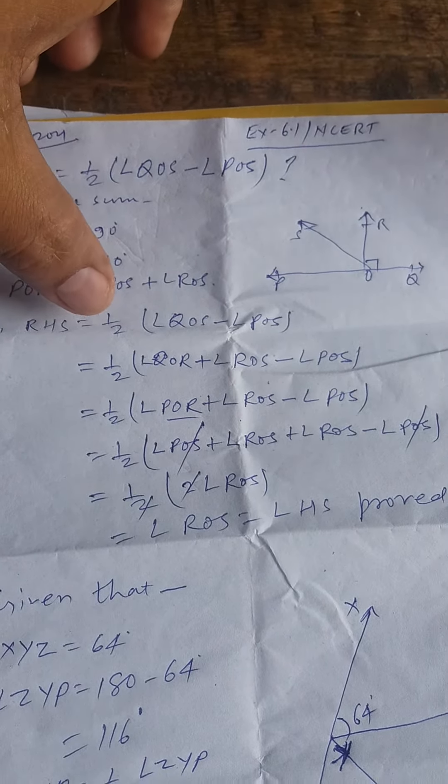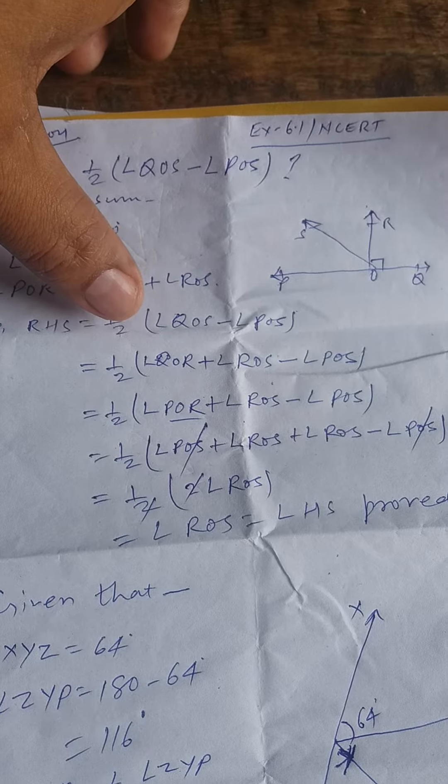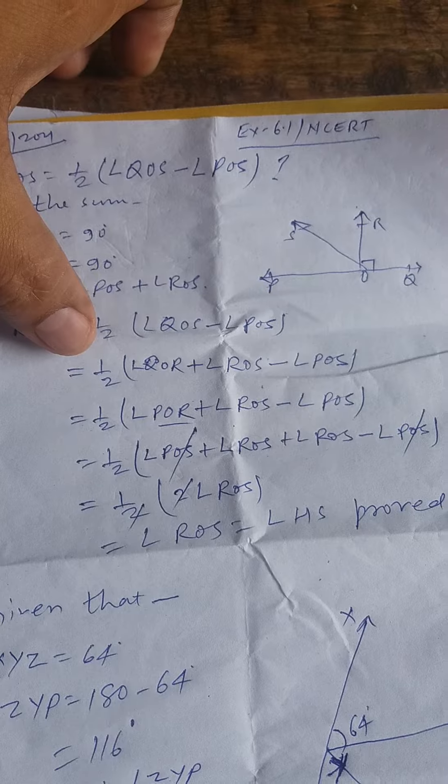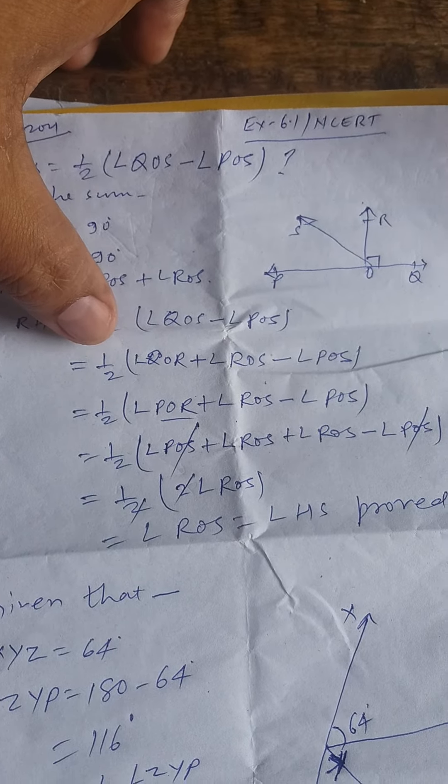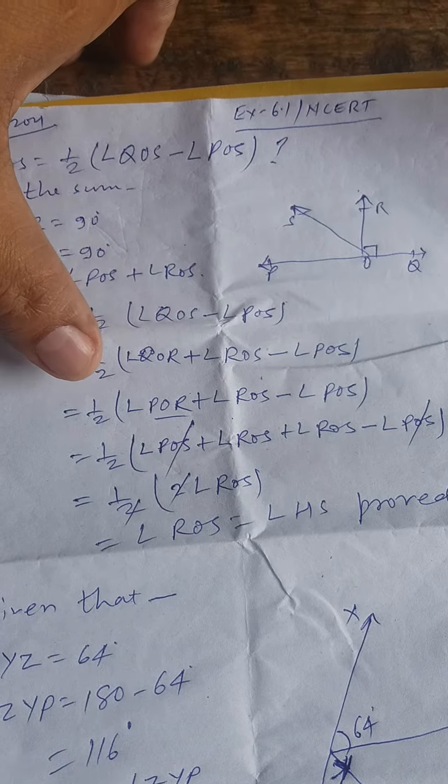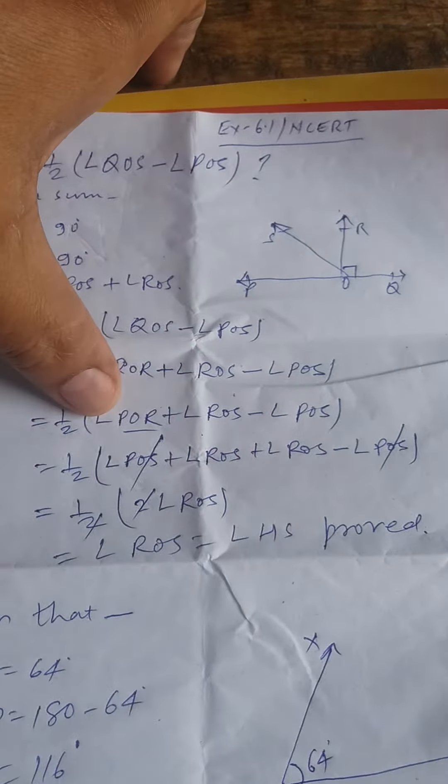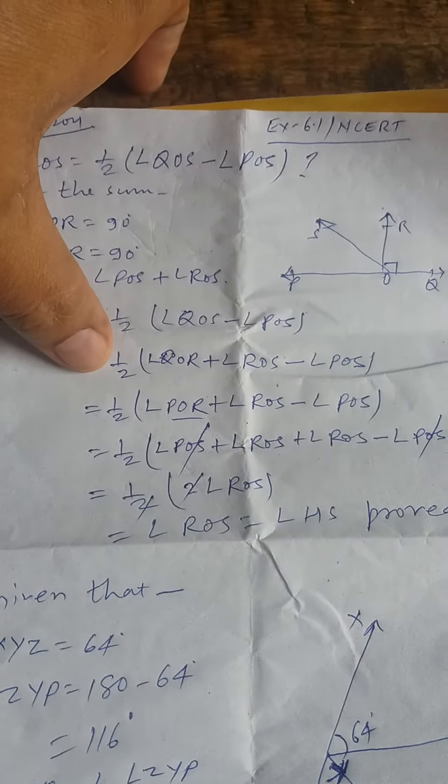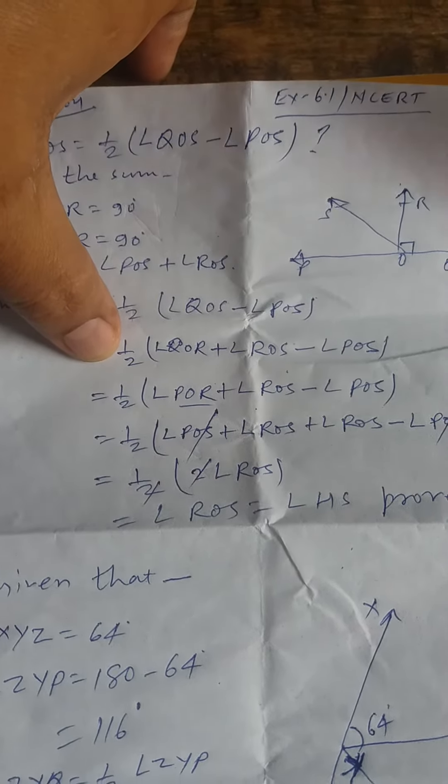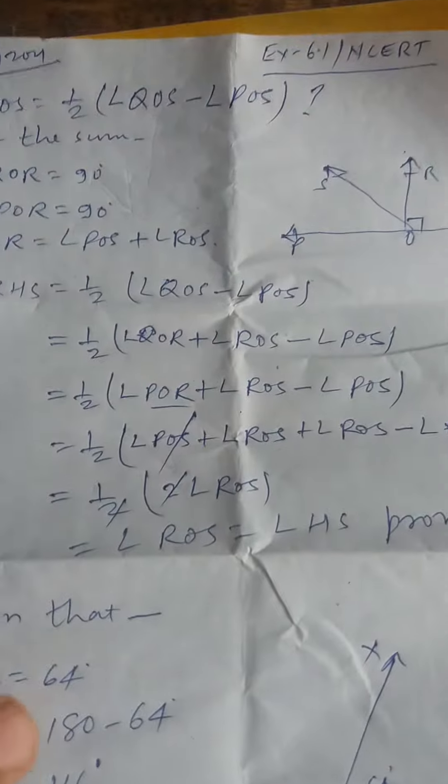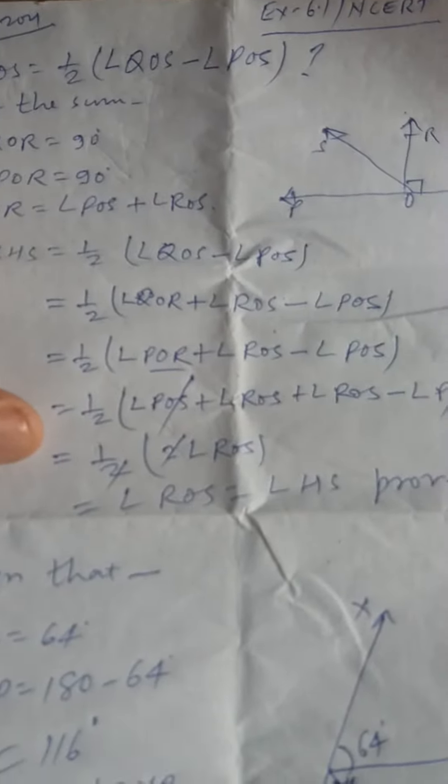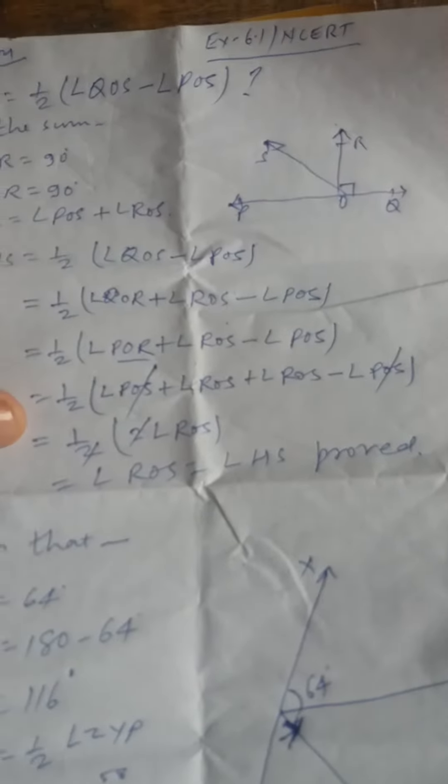RHS equals 1/2 into (angle QOR minus angle QOS). So it will be 1/2 times (angle QOR plus angle ROS minus angle QOS), which equals 1/2 times (angle QOR plus angle ROS minus angle QOS). That is 1/2 angle QOS plus angle ROS.